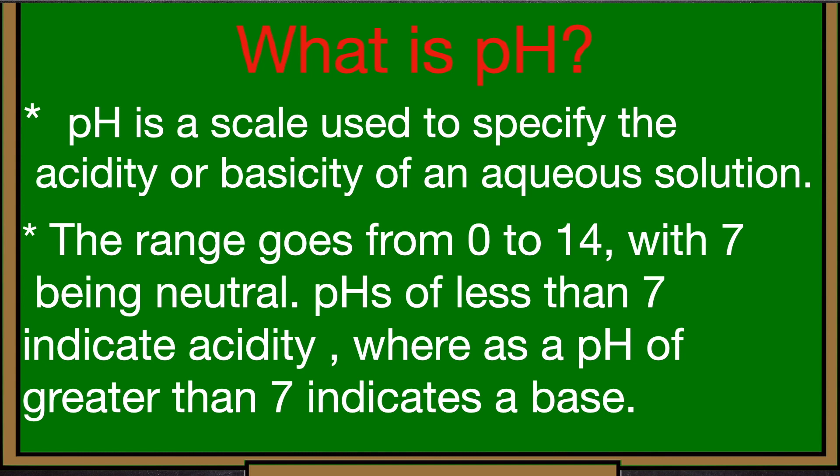pH is a scale used to specify the acidity or alkalinity of an aqueous solution. Acidity means acidic and basic means alkaline. It means acidic is on the lower end and base is on the higher end.